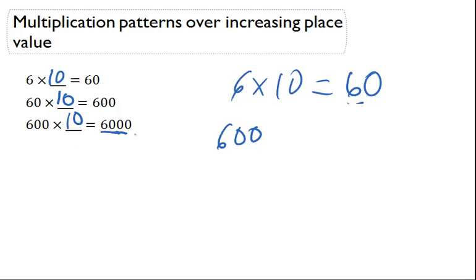And then that's going to give us 6,000 because when you multiply 600 times 10 you have 1 times that 600 which is going to give you the same number 600. And then you have that additional place value from the 10 and you put a 0 right there. And so that's a very quick way to multiply with 10s so you can get increasing place value.